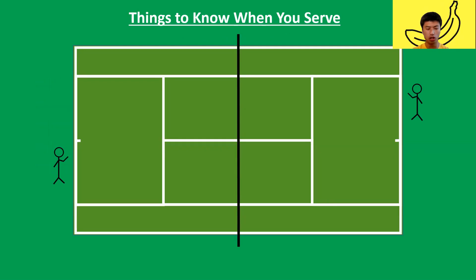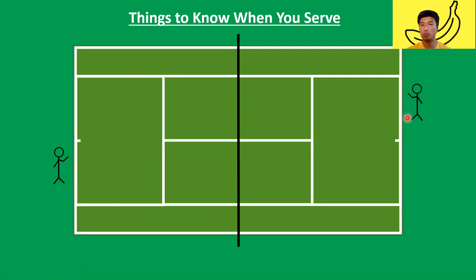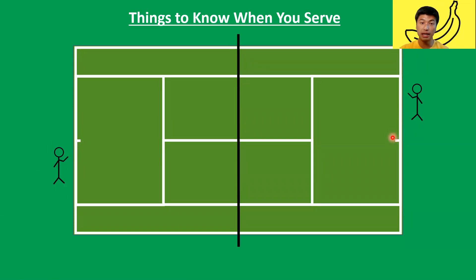Things to know when you serve. You cannot cross the baseline — this is where all the points start. It always starts on the deuce side. Every game, the starting point, you will start serving from the deuce side. Likewise, if your opponent is serving, he has to serve from his deuce side. Remember, the deuce side is when you're facing the net, everything on the right. This is the center marker — it splits the court in half. So it starts on this side.